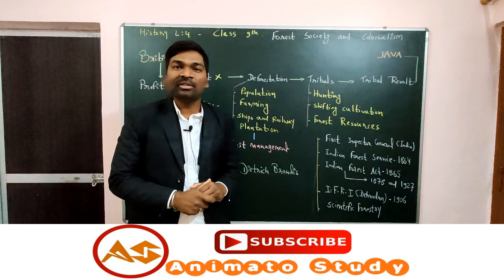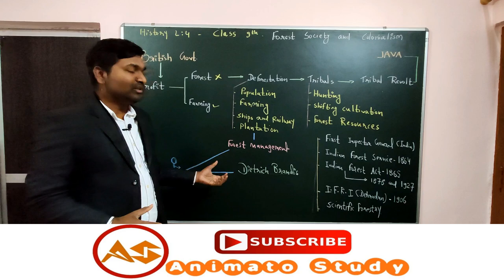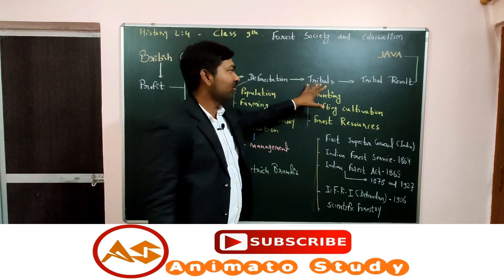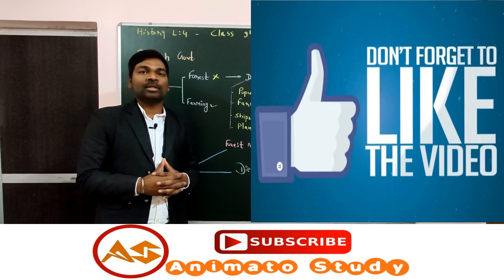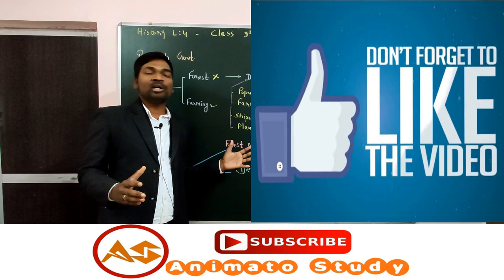One question to think about: will scientific forestry be accepted or rejected by the tribals? Comment your answer in the comment section. These are the complete introduction topics for part one. In the next part we will discuss how the Britishers exploited tribals by stopping hunting, shifting cultivation, and forest resource use. If you like this video, please hit the like button and subscribe to our channel. Comment any doubts and we will see you in the next video.